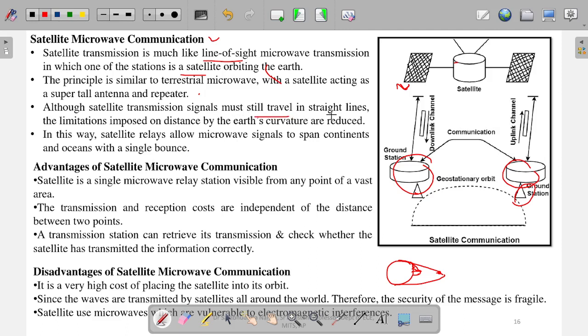That is why satellite communications are more used, basically used to transfer data over a wide surface area. Although satellite transmission signals must still travel in straight lines, the limitation imposed on the distance by the earth's curvature is reduced. In this way, satellite relays allow microwave signals to span continents and oceans. If a satellite is here and it cannot access this place, then I will place one satellite here. This satellite can send the signal here, and this satellite can cover all this area. Like this, with some more satellites, the whole earth can be covered.